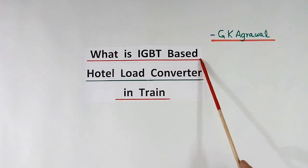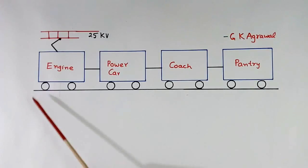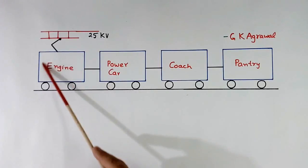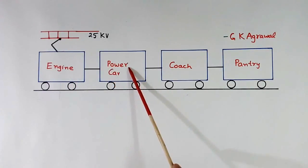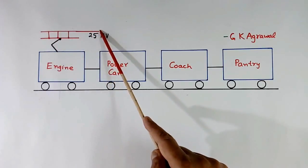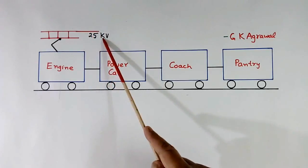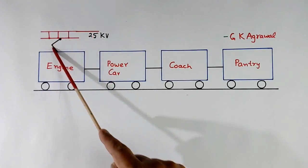What is IGBT-based hotel load converter in train? This is a simple block diagram of one electrical train. This is engine, this is power car, this is coach where we go and sit, and this is pantry car. This is track. This is 25 kV single phase supply, overhead supply, from where we get power to run this engine. This is pantograph.